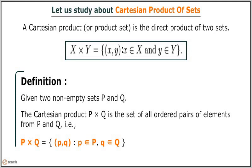Given two non-empty sets P and Q, the Cartesian product P into Q is the set of all ordered pairs of elements from P and Q, i.e., P into Q equals the set of all ordered pairs such that p belongs to the set P and q belongs to the set Q.